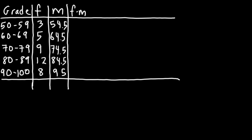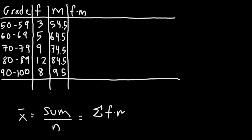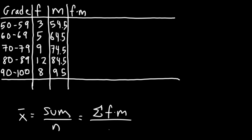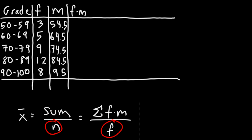Before we calculate the standard deviation, we need to calculate the mean. The mean is the sum divided by the number of values. For grouped data, the sum is the frequency times the midpoint values, which we'll compute in the fourth column, divided by the sum of the frequencies. Note that the sum of the frequency values equals the total number of data values.